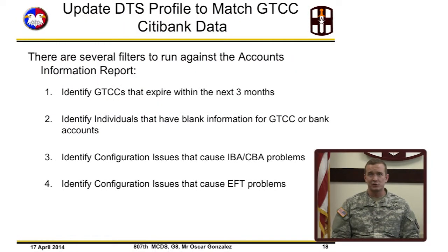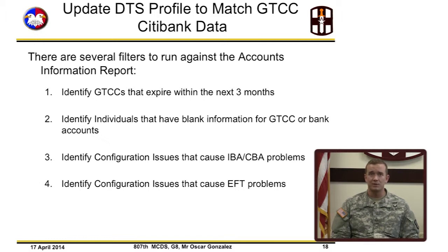There are several filters to run against the Account Information Report. First, identify travel cards that expire within the next 3 months. Second, identify individuals that have zero information for their travel card or bank account. Third, identify configuration issues that cause individually and centrally billed account and EFT problems.